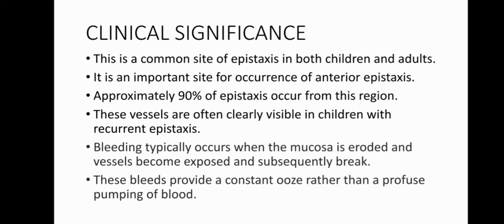What is the clinical significance? It is that it is a common site of epistaxis in both children and adults, particularly so in anterior epistaxis. Approximately 90% of epistaxis occur from this region. The vessels are often clearly visible in children with recurrent epistaxis. Bleeding typically occurs when the mucosa is eroded and the vessels become exposed and subsequently break. These bleeds provide a constant ooze rather than a profuse pumping of blood.